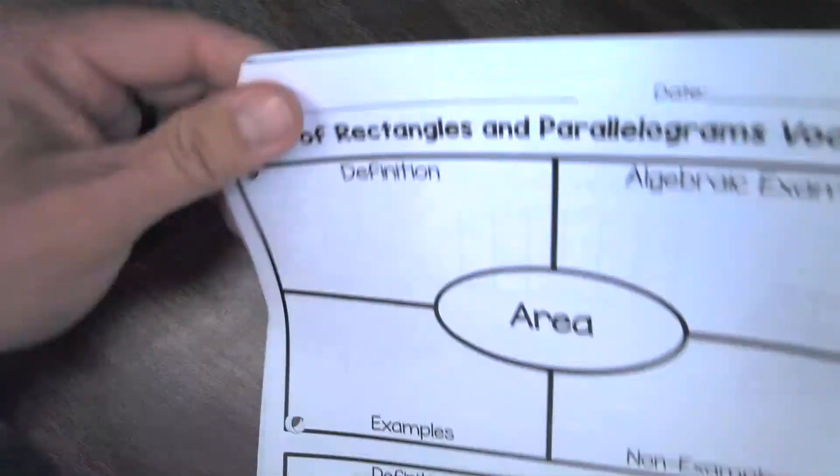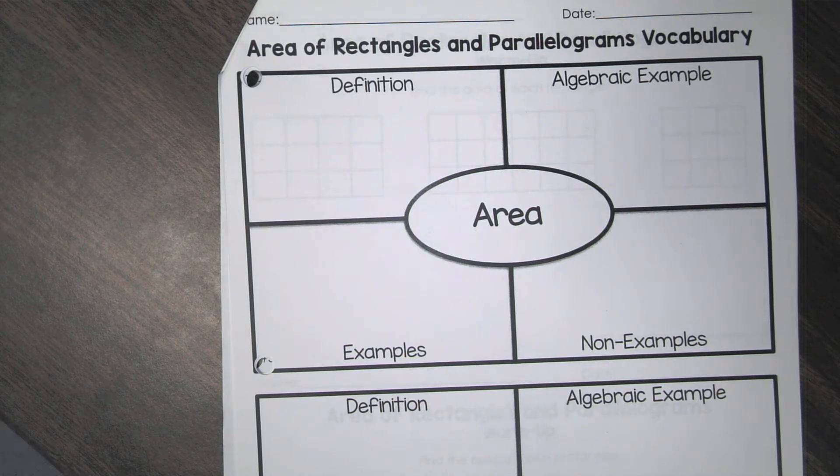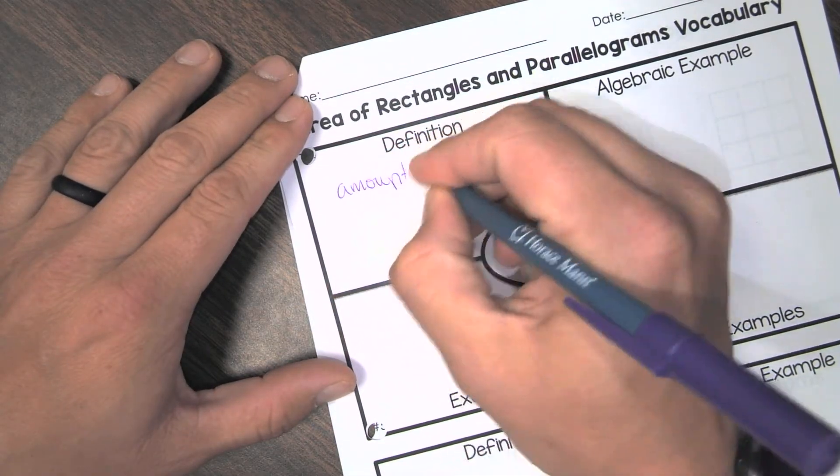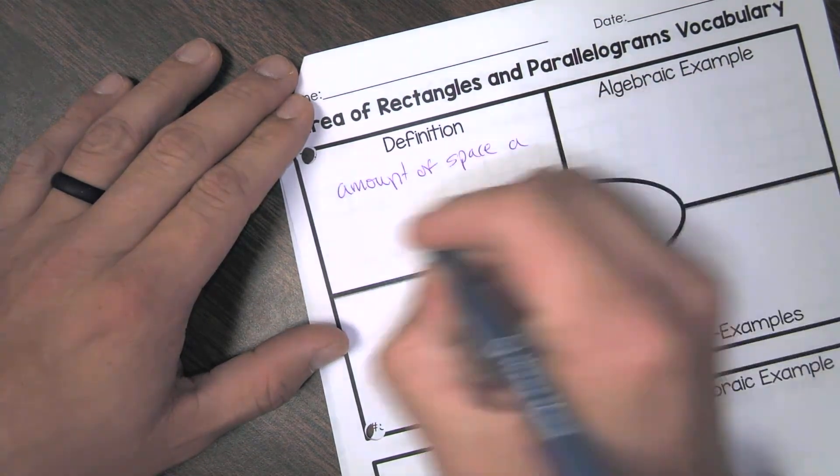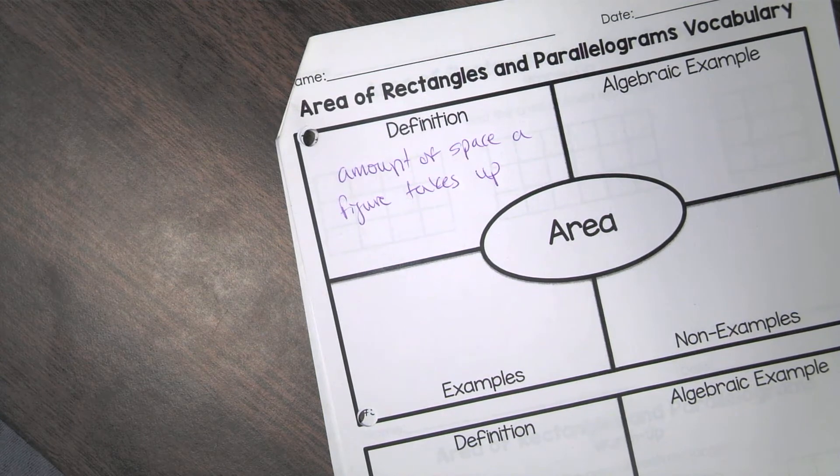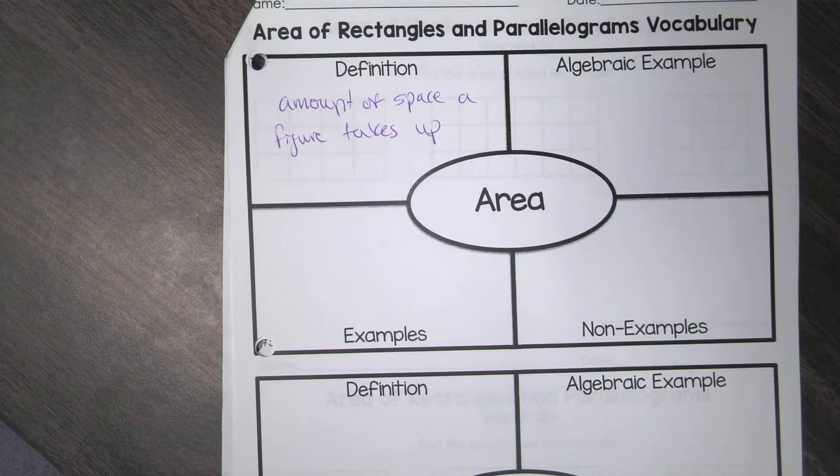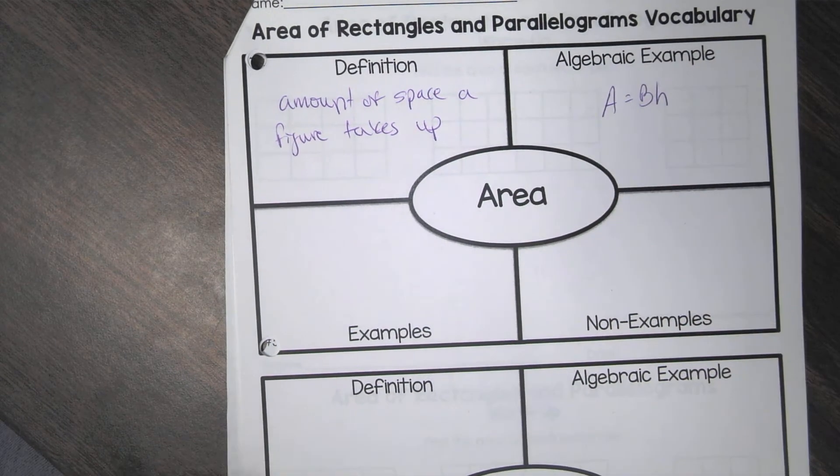So let's go ahead and go on to the next page. We're actually going to skip this page for now. We're going to come back to it. Go to the page where it has the vocab. So let's start with area. So the definition of area is what? Does anybody remember? No, that's the formula. What's the definition of area? Go back and look at my first page. The amount of space that each figure has. Amount of space that a figure takes up.